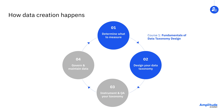The first course covers how to determine what user actions and attributes to measure in your product based on your business use cases, and then helps you translate that into a well-designed data taxonomy.